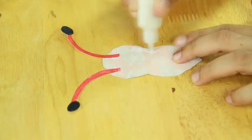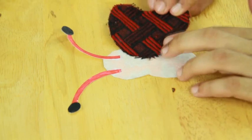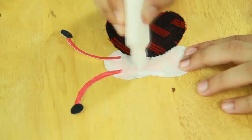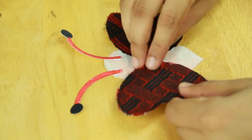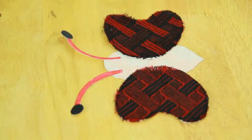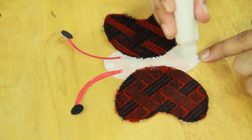Now apply fabric glue along the edges of this body cut out. Do not glue the bottom part. Place the other body cut out on it. Press them together and leave it to dry.